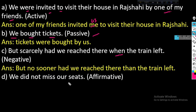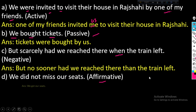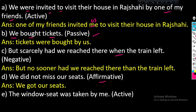We didn't miss our seats. We got our seats. Now we have to see the window seats. The window seats were taken by me. We are passive — our auxiliary, our past participle form. We have to see the window seats.